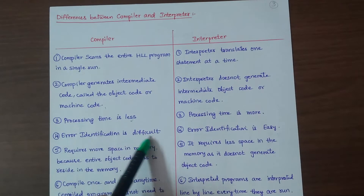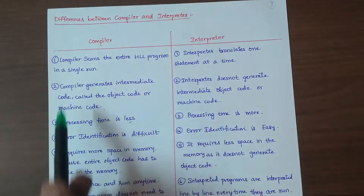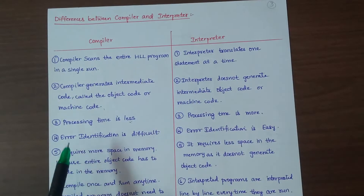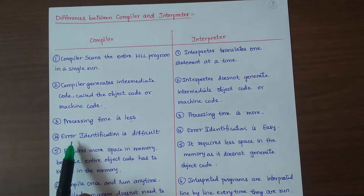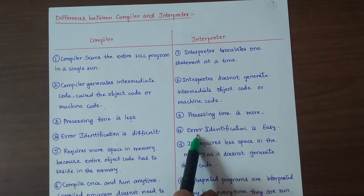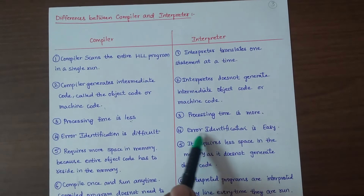Point 4: Error identification is difficult with a compiler, because the entire code is scanned in a single round before errors can be identified. Whereas with an interpreter, you can easily find the error since it reads line by line.